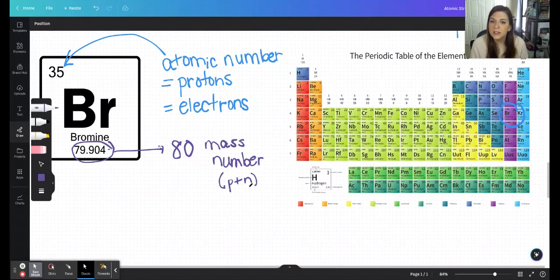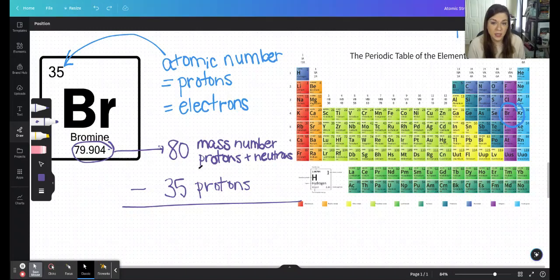The majority of the bromines will have enough neutrons that their mass number will be 80. With a mass number of 80, that is equal to the protons plus the neutrons. So if I wanted to find just the neutrons, I should subtract the number of protons, which is 35. Bromine, in the case of having a mass number of 80, would have 45 neutrons.